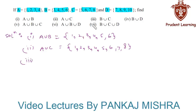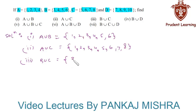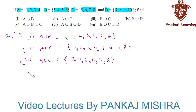In the third section we need to find B union C, that is the elements that are present either in B or in C. So this is equal to {3, 4, 5, 6, 7, 8}.